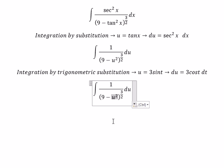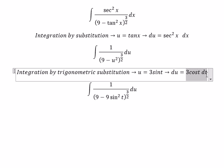For this one, we substitute in and we get 9 sin² t, and du we change for 3 cos t dt.